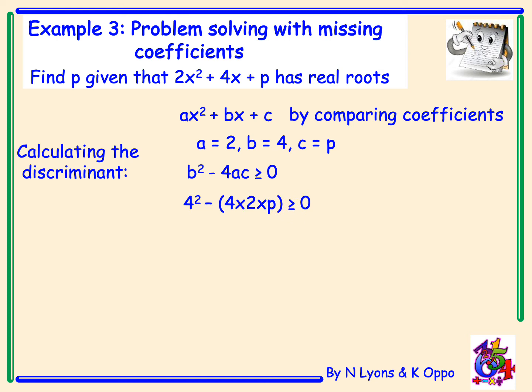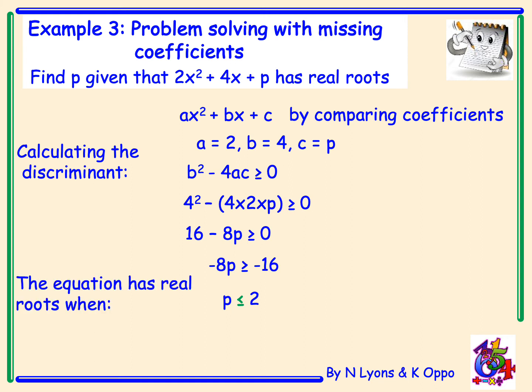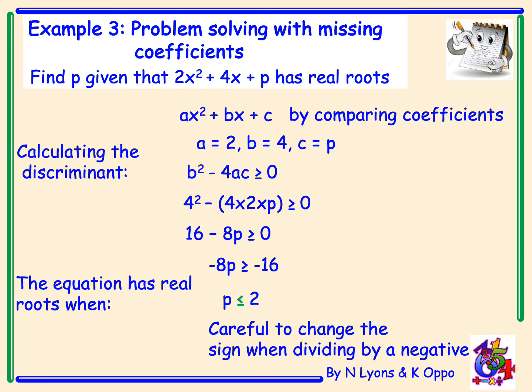Substituting in: 4 squared minus 4 times 2 times p is greater than or equal to zero. That gives me 16 minus 8p greater than or equal to zero. Solving for p: minus 8p is greater than or equal to minus 16. Dividing by minus 8 — and remember to flip the inequality sign when dividing by a negative — gives p is less than or equal to 2. So the equation has real roots when p is less than or equal to 2.